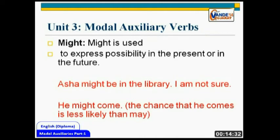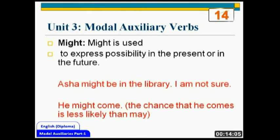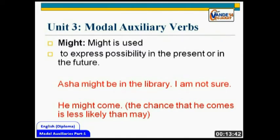The next auxiliary is 'might'. Might is used to express possibility in the present or in the future, but 'might' expresses less possibility than 'may'. Whenever there is lesser possibility, use 'might'. 'Asha might be in the library — I am not sure.' You are just giving a passing remark, just guessing. 'He might come' — the chance he comes is less likely than if you say 'he may come'. With 'may' there might be 50% chance; with 'might' you are very unsure, just saying it for the sake of it.